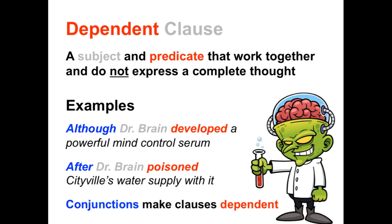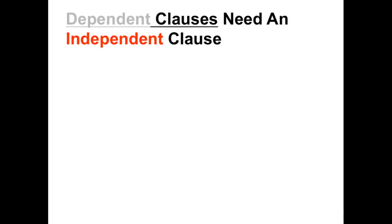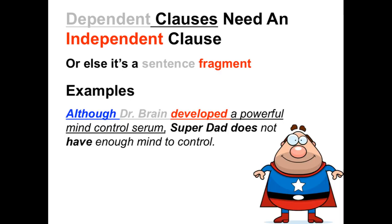The words in blue are conjunctions. Conjunctions are words that make clauses dependent. When we add a subordinating conjunction to a clause, it becomes a dependent clause, which means it cannot stand by itself. Dependent clauses need an independent clause to express a complete thought. Otherwise we have sentence fragments. Here's an example: 'Although Dr. Brain developed a powerful mind control serum, Super Dad does not have enough mind to control.' The first clause is a dependent clause because of the subordinating conjunction 'although.' It needs the second clause — 'Super Dad does not have enough mind to control' — in order to express a complete thought.